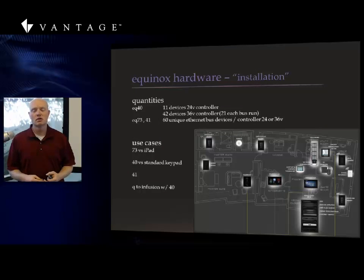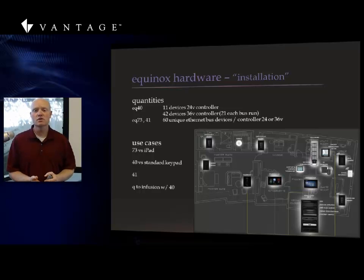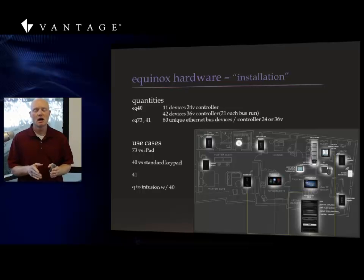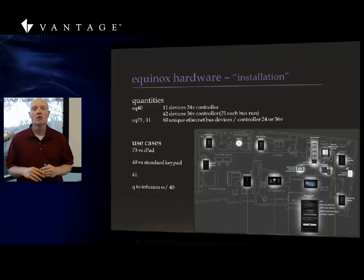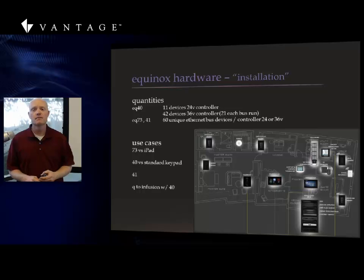On installation, let's talk about quantities. The Equinox 4.0 is on Vantage Station Bus — notice it has limited capabilities compared to the 4.1 and the 7.3, as it has mini widgets rather than full widgets. It does reside on Vantage Station Bus, which is a very powerful station, but it does draw more power than any of our other keypads.